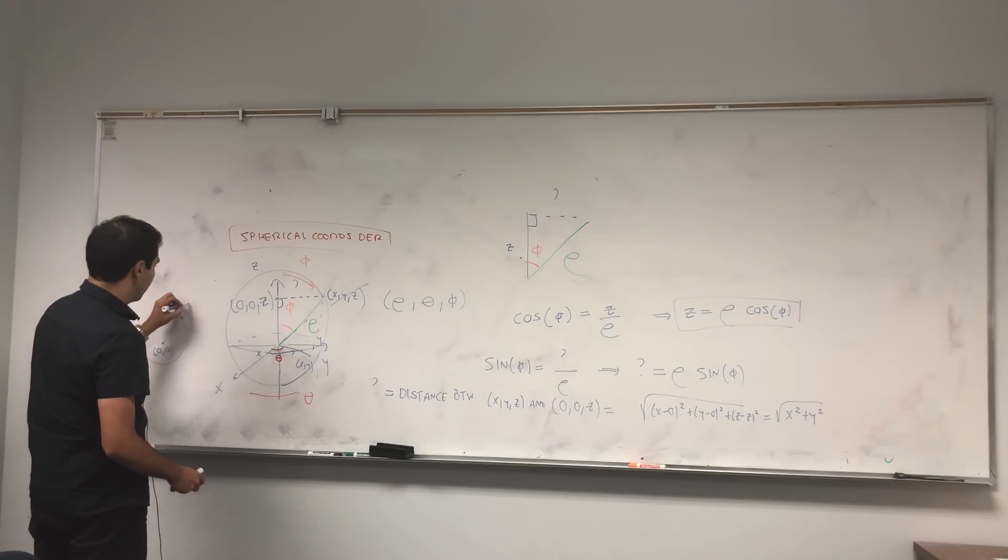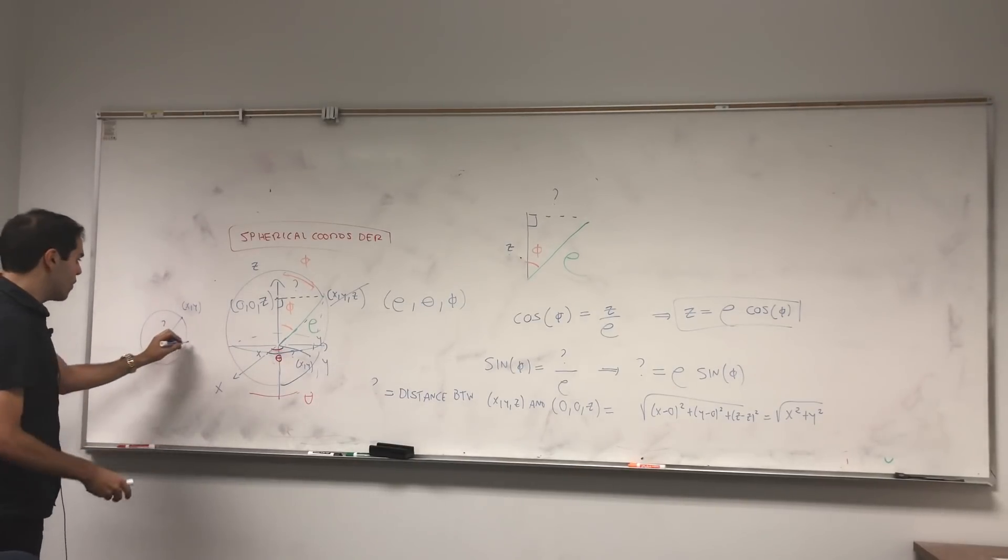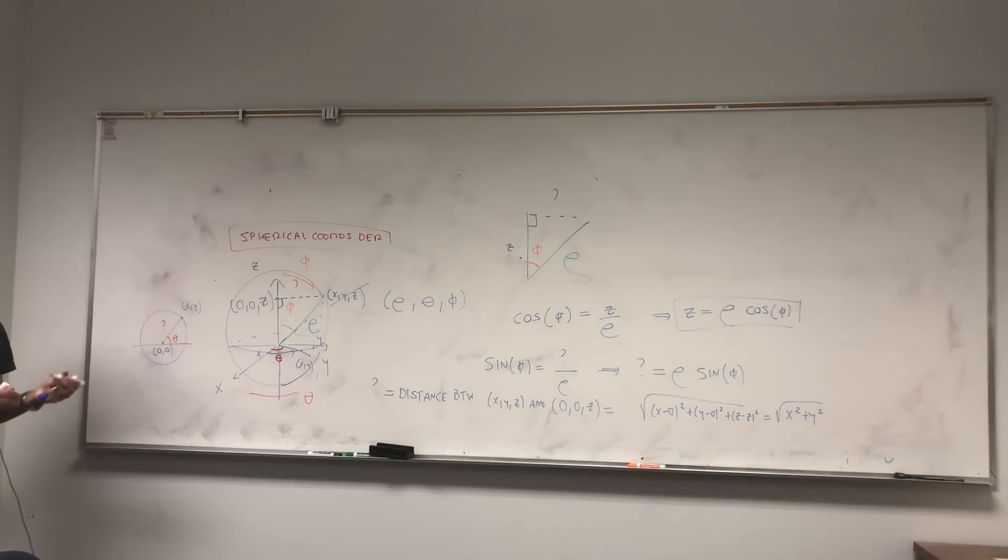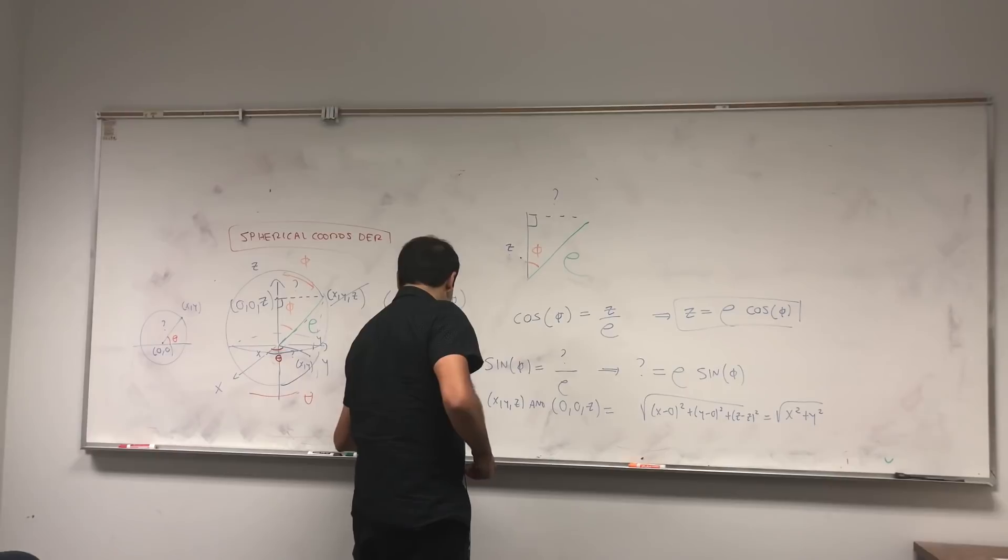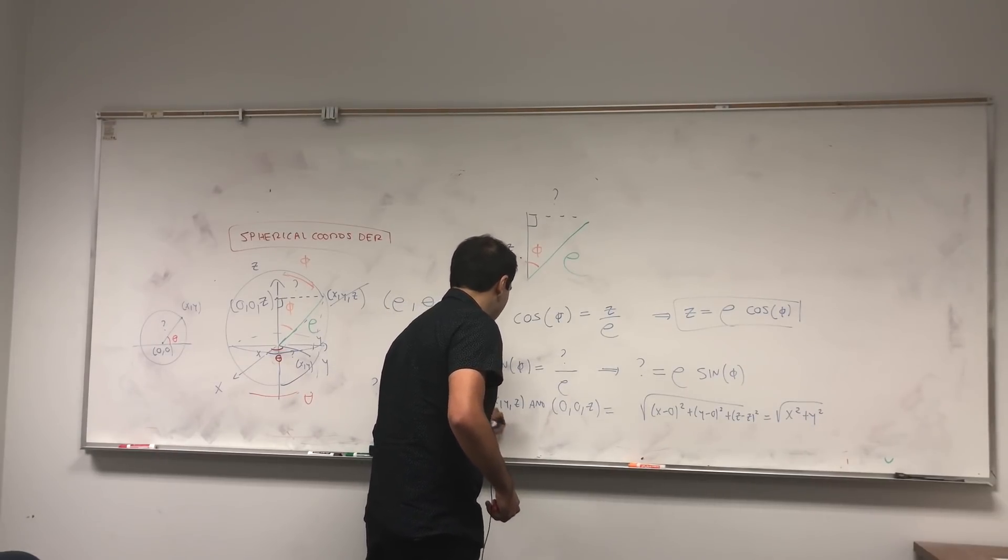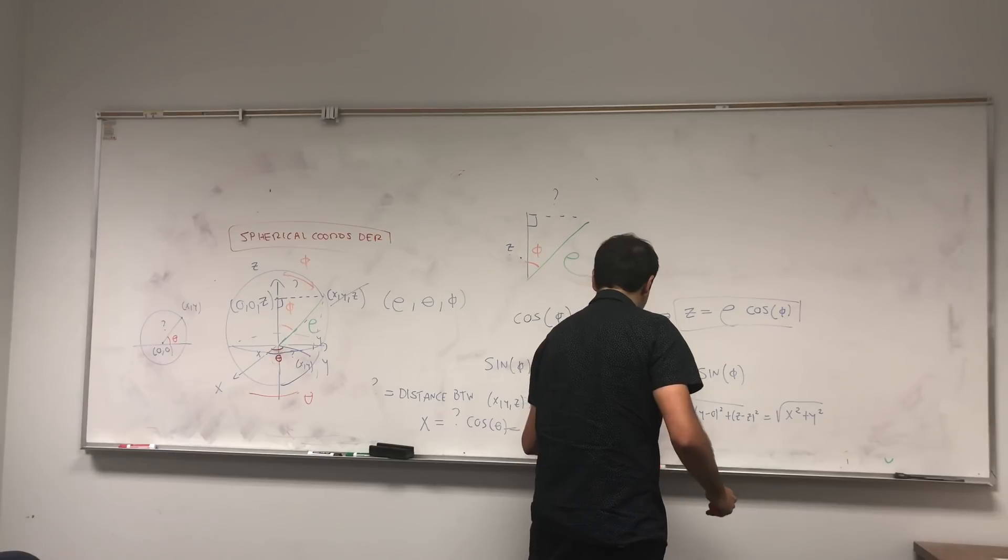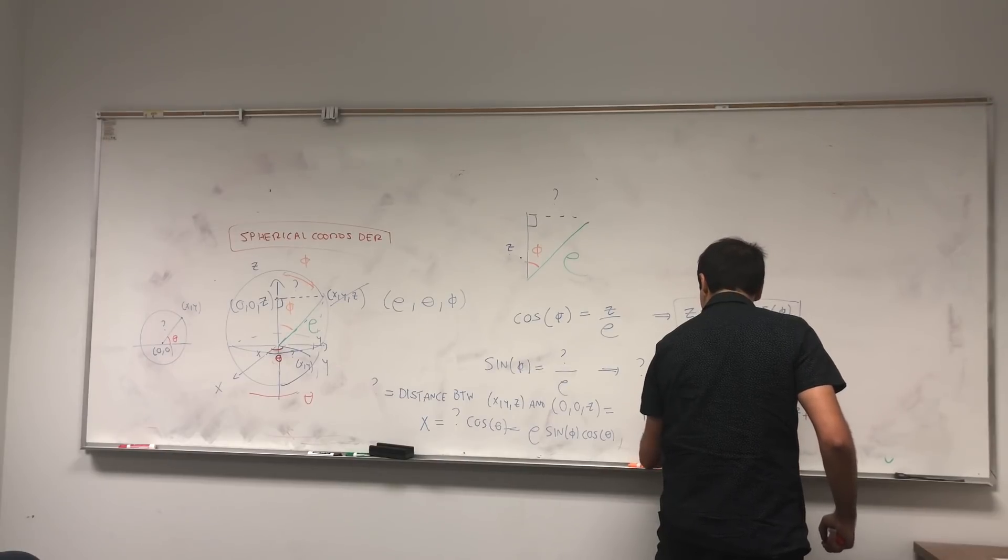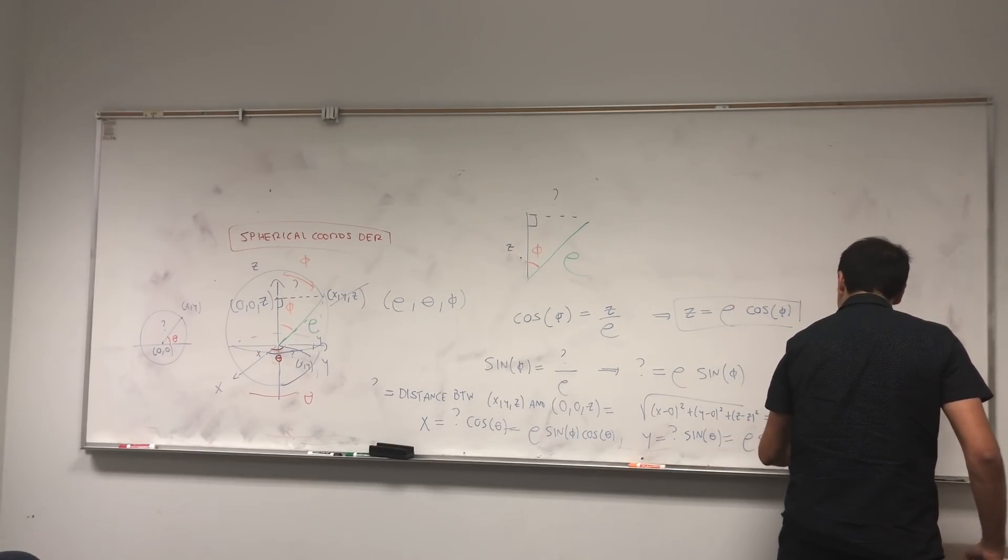So what do we have? We have 0, 0. We have x comma y. And the radius question mark. And moreover, we have the angle theta. And so that should remind you a lot about polar coordinates. So, given a radius question mark and an angle theta, what are x and y? Well, x is just question mark cosine of theta, which becomes rho sine phi cosine of theta. And what is y? y is question mark sine of theta, which is rho sine phi sine of theta.